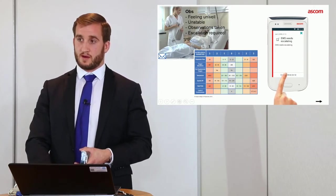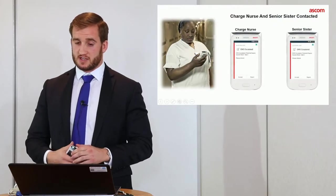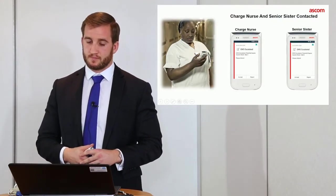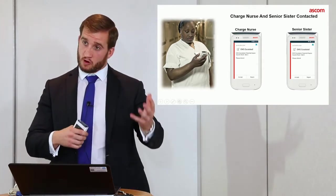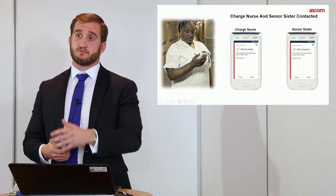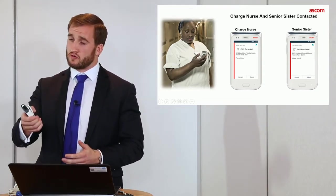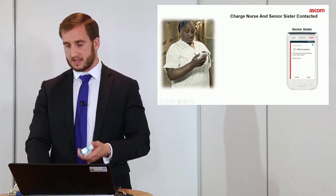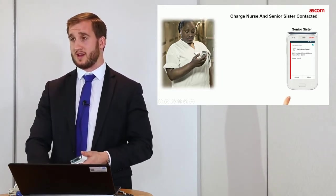We should now have two more alerts. So let's go to the charge nurse first. What does your message say? It says EWS escalating. Now at the moment you're currently dealing with a patient. You've got your own patients to worry about. I'd like you to press reject for me please. Senior sister, can you read out what your message says? EWS escalating. So what I want you to do, you're free to deal with this, I want you to press accept on your handset.